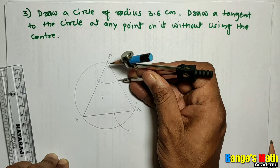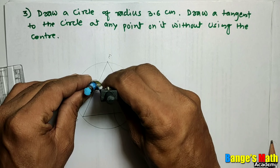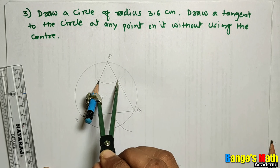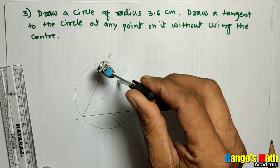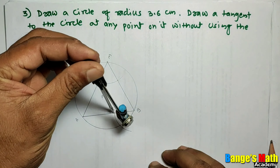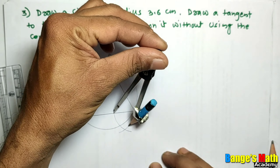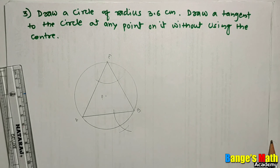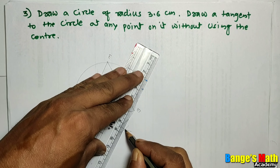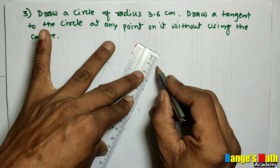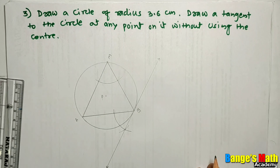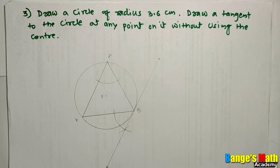Then take distance in your compass. Keeping the distance same, put the still point on this point and draw an intersecting arc to the previous arc. Then, with the help of a ruler, join point B and this point of intersection. Then, with the help of a ruler, draw the tangent to the circle without using the center of the circle.